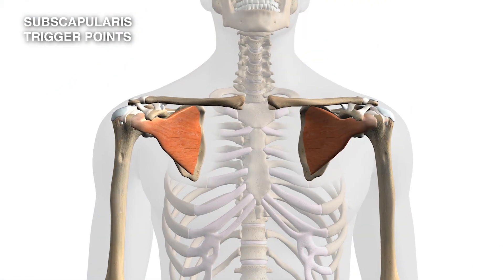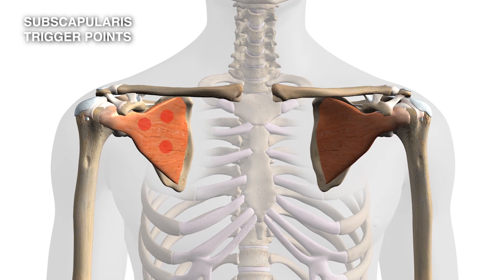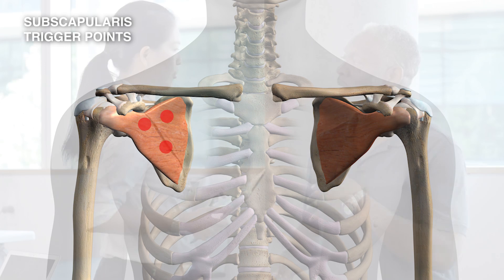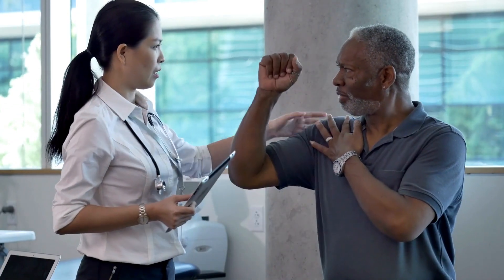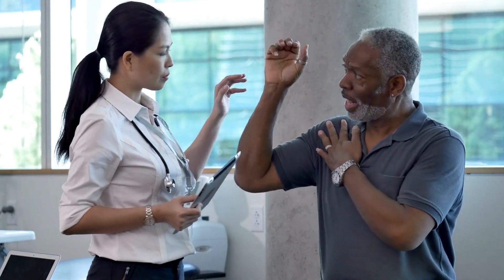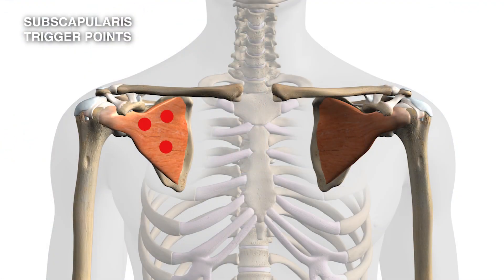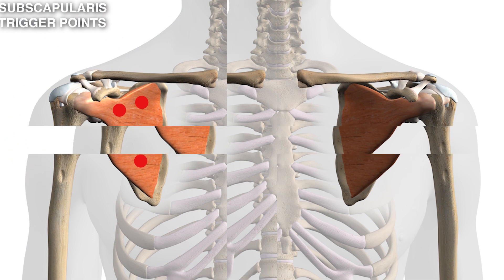This is true except if there are trigger points in the subscapularis tendon. So if somebody presents with a painful shoulder and restriction in all movements including external rotation, what the astute clinician should do is check for trigger points in the subscapularis muscle.